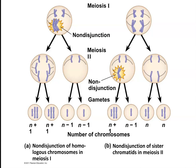If nondisjunction happens on one of the sex chromosomes, it can result in one of many different syndromes, including Turner's, which is the only monosomy, Klinefelter's, which is XXY, super male, which is XYY, and super female, which is XXX.